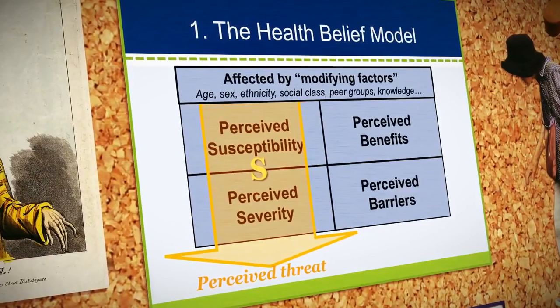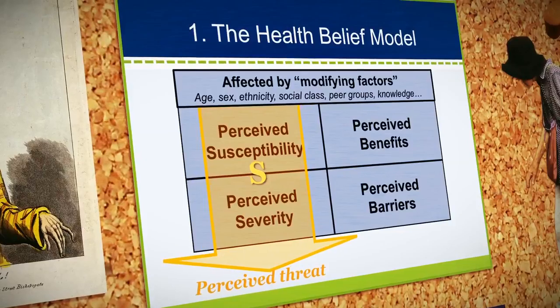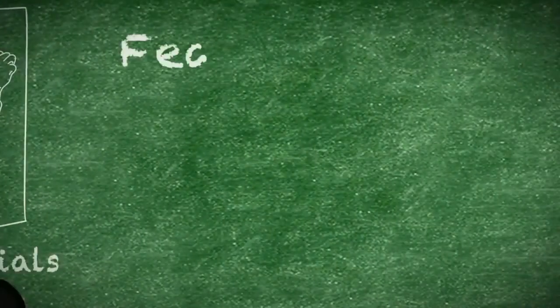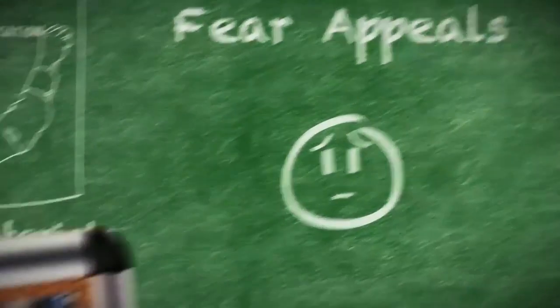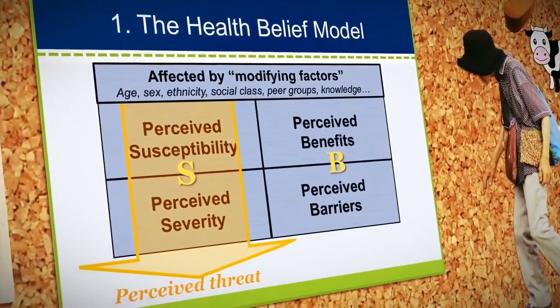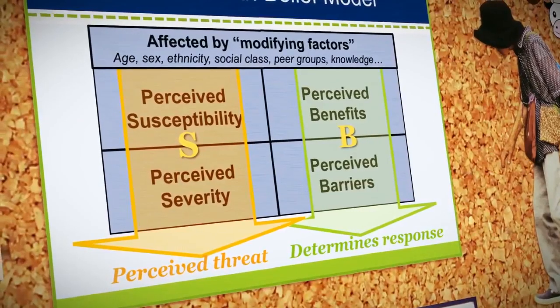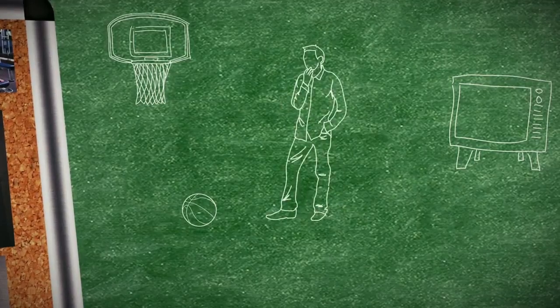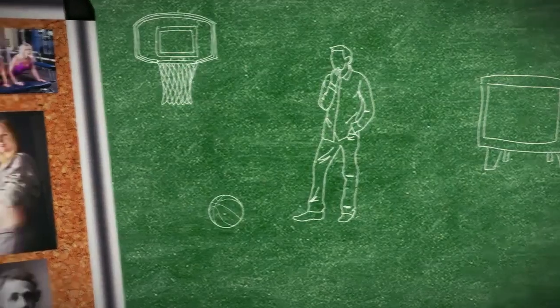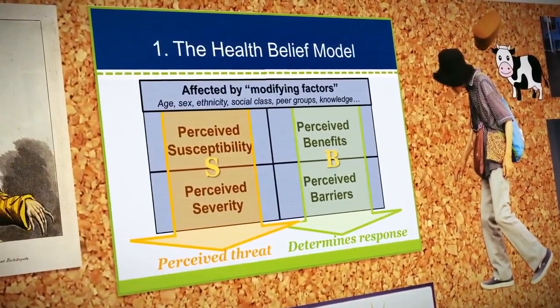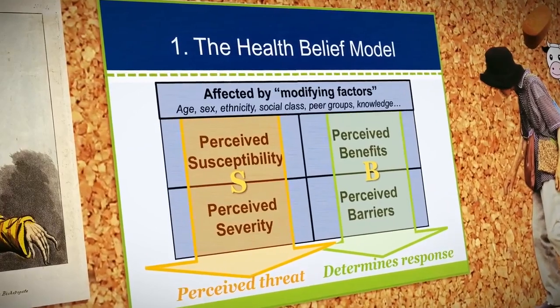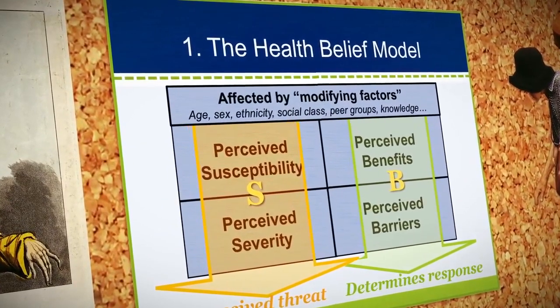This points to one goal for health promotion programs based upon the health belief model: creating realistic perceptions of threat in the target population. Strategies for increasing perceived threat could include educational materials to increase perceived severity or fear appeals to increase perceived susceptibility. Our evaluations of perceived benefits and perceived barriers combine to determine our response — we evaluate the pros and cons and determine whether there would be a net gain associated with this action. This points to further tasks: ensuring the benefits of the recommended action are clearly communicated and developing strategies to minimize the barriers people may experience.